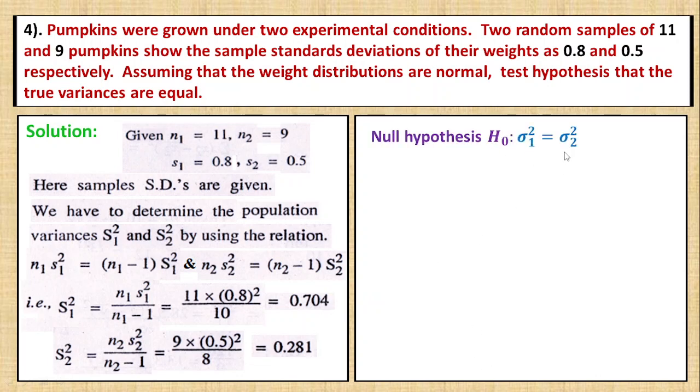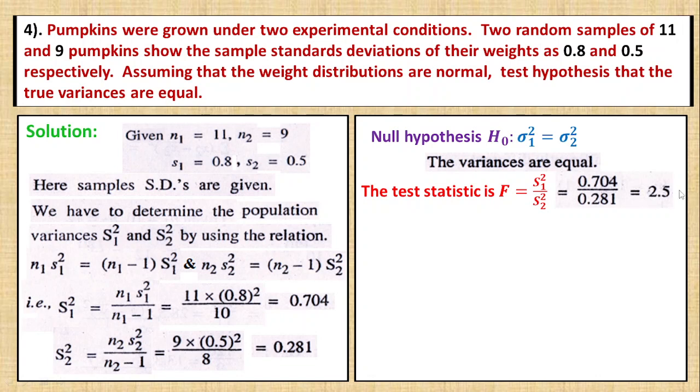The null hypothesis H₀ is that the two population variances are equal. The test statistic is F = S₁²/S₂². Applying the values: 0.704 divided by 0.281 gives us 2.5.